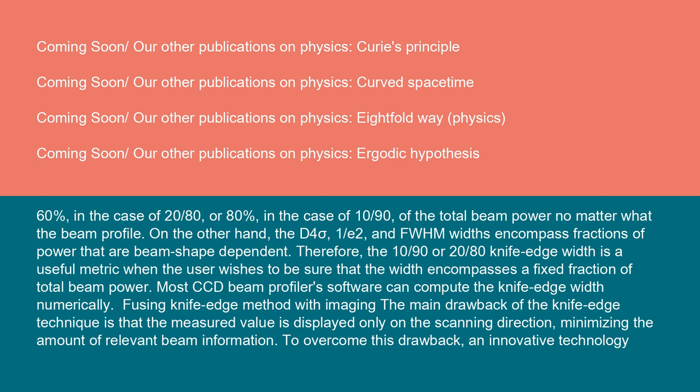On the other hand, the D4 sigma, 1/e², and FWHM widths encompass fractions of power that are beam shape dependent. Therefore, the 10/90ths or 20/80ths knife edge width is a useful metric when a user wishes to be sure that the width encompasses a fixed fraction of total beam power. Most CCD beam profiler software can compute the knife edge width numerically.